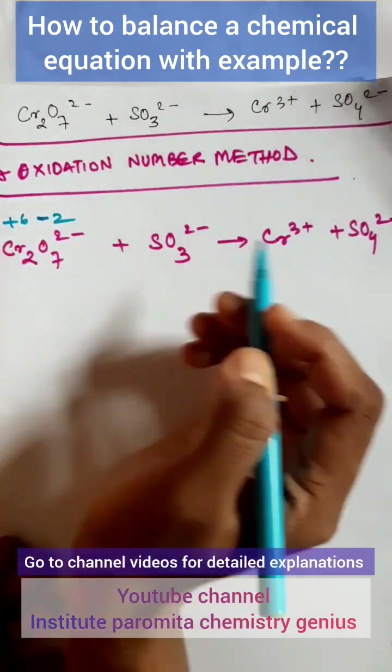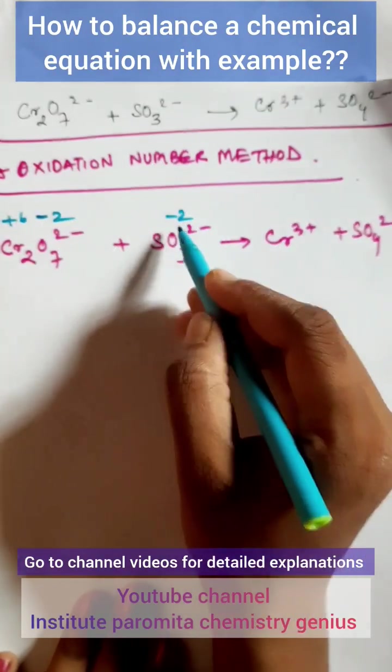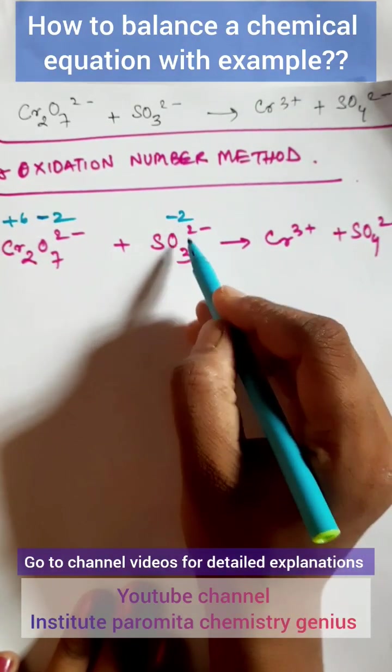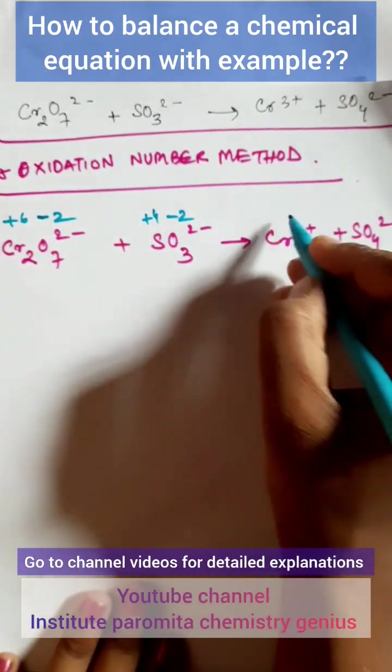Is plus 6, plus 6 for this chromium out here. Here it is minus 2 again, minus 2, 3s are 6, 6 minus 2, 3s are 6, 6 minus 2 is 4, plus 4 here and it is plus